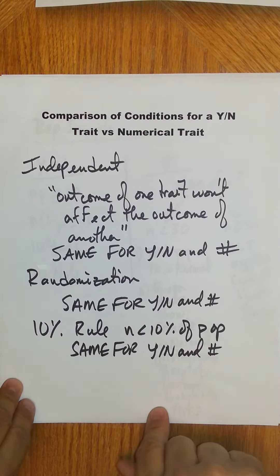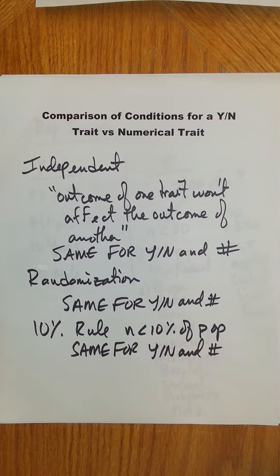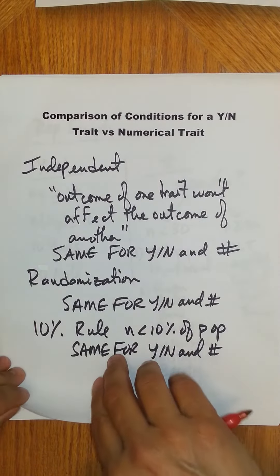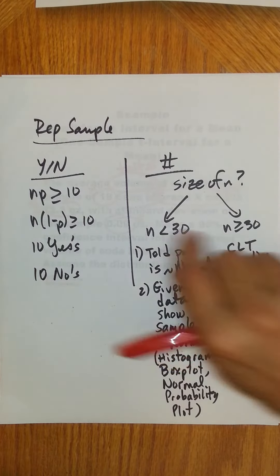Randomization, everything has an equal chance of being selected, that's the same for a yes-no trait as a numerical. 10% rule, where the sample size is small relative to the population, meaning it's less than 10% of the population, that's the same for a yes-no trait and numerical.